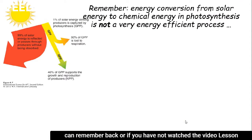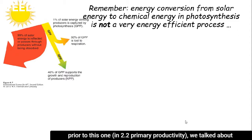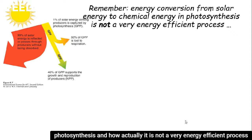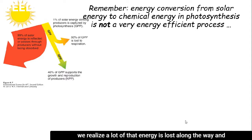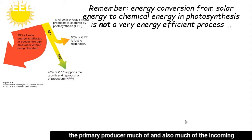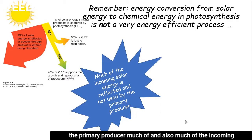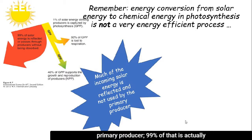If you remember back to video lesson 2.2, we talked about photosynthesis and how it is not a very energy efficient process. As energy is converted from solar energy from the sun to chemical energy stored in plants or other primary producers, a lot of that energy is lost along the way. In fact, 99% of incoming solar radiation is actually reflected, and only 1% is actually used for photosynthesis.